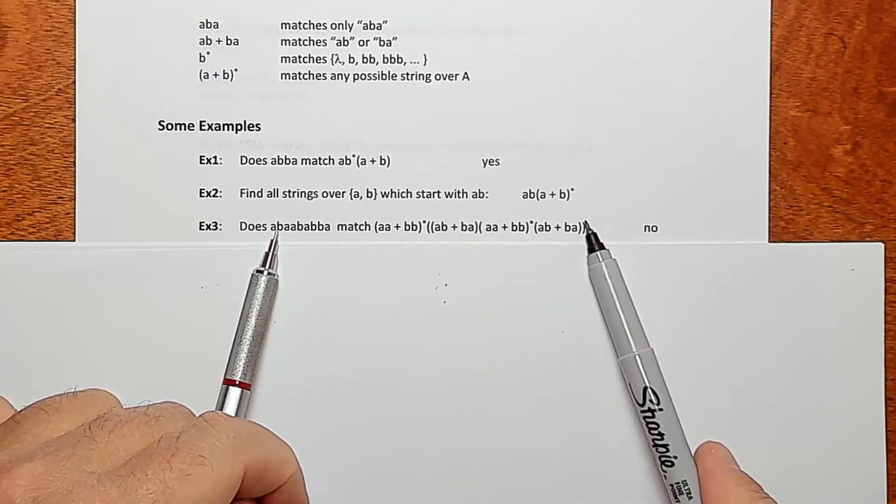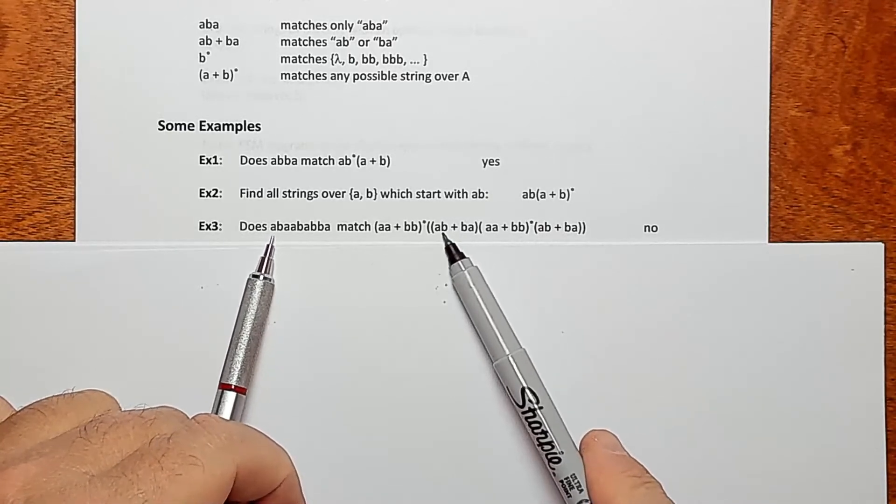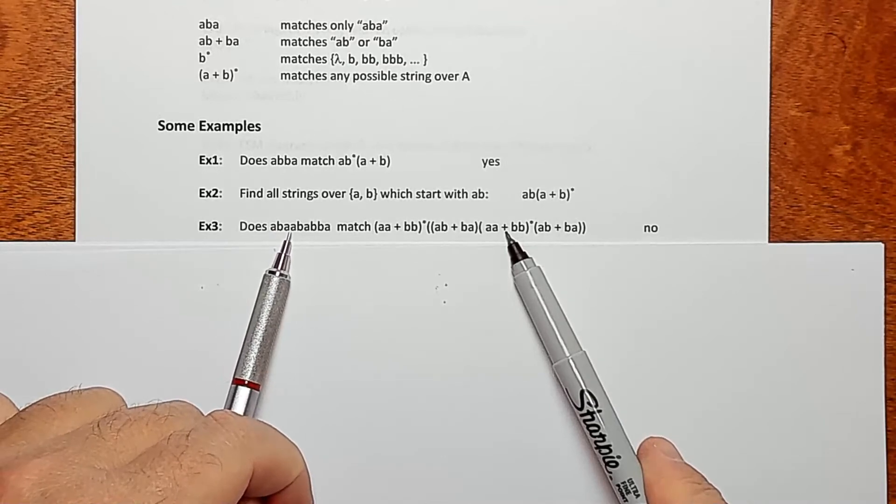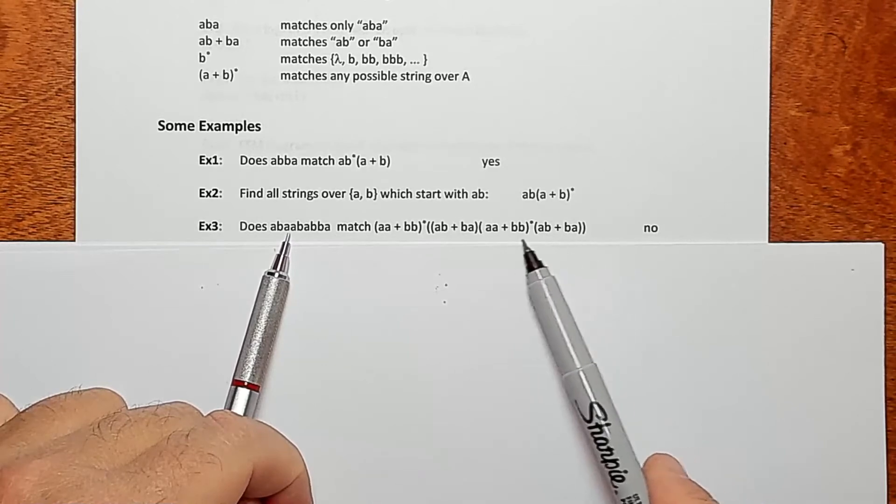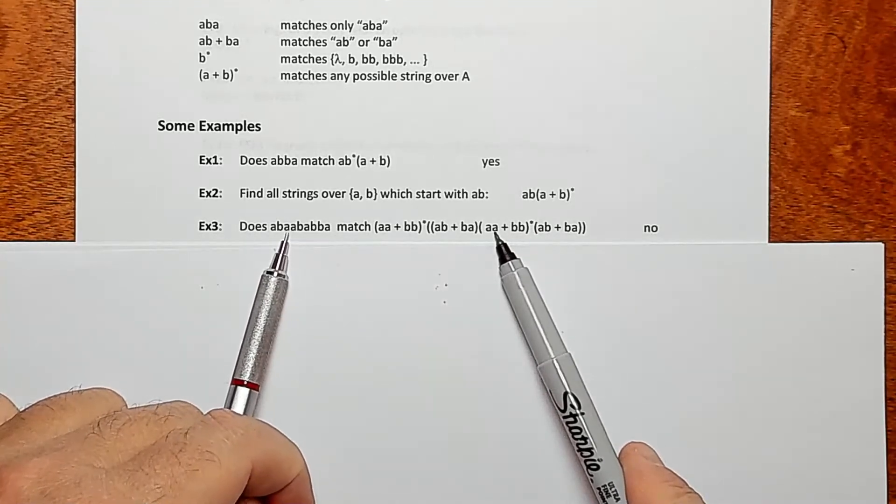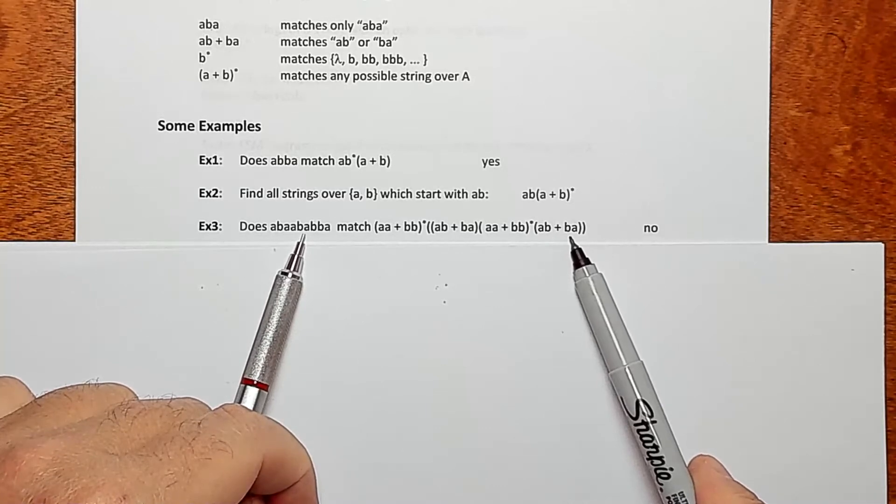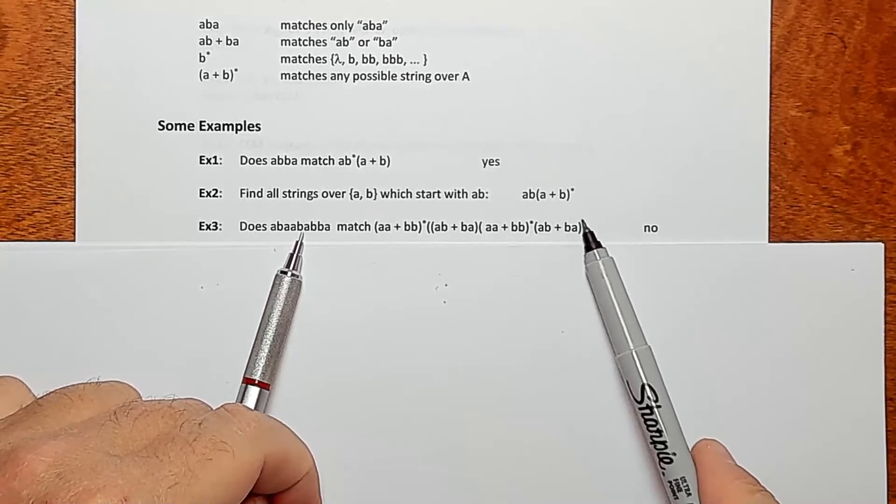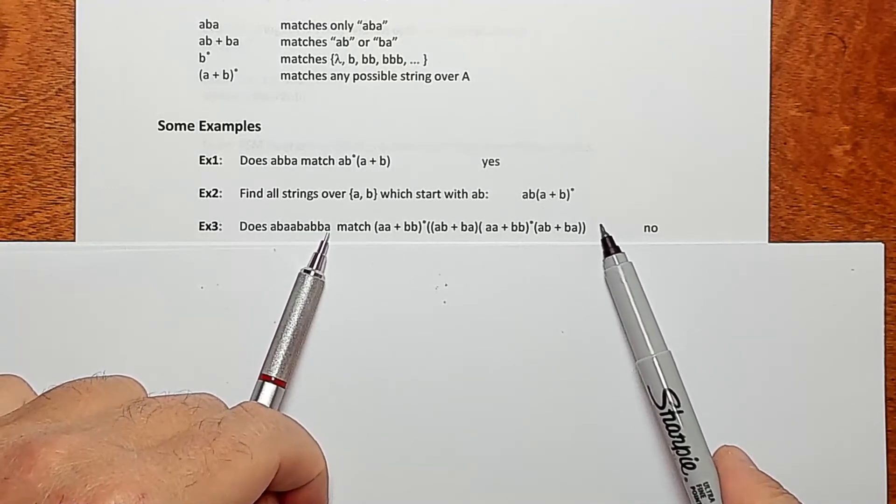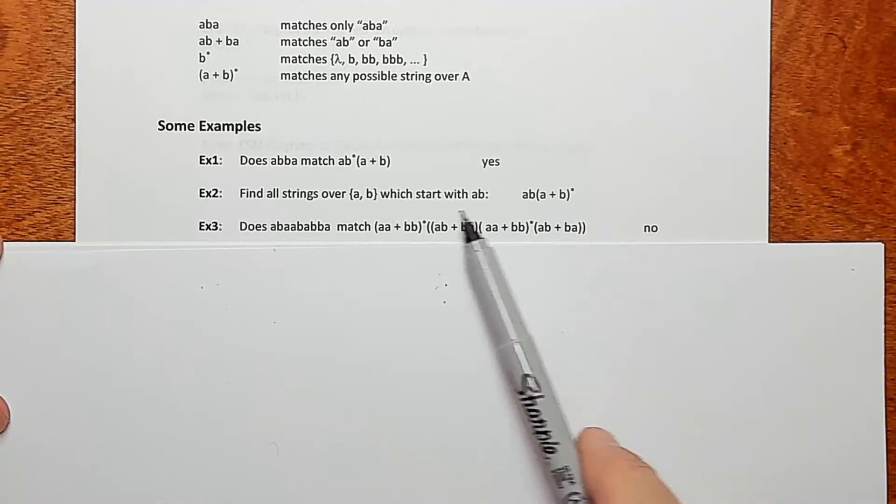Then we've got to do this stuff in here, stuff in the outer parentheses. We have to do all of this. So the first parentheses in here, we can choose AB. And that'll take care of this AB in the string. Then over here, we have an AA we need. And we're not going to get it from here, right? So we have to get it from this grouping here. So we'll do this grouping once and choose the AA. That gives us this AA. Okay. Now we need a BA. And we're not going to get it from here. So we have to go over here. And we can choose this BA. That gives us this BA right here, this guy. But then we're done. And we still have BBA. So no, it doesn't match. There's no way for this pattern to match this particular string.